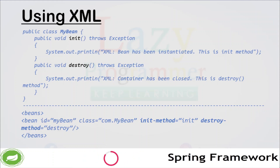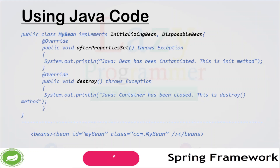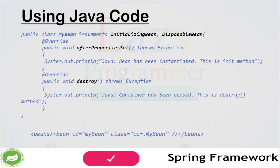The second way is using Java code. For the beans to call custom init and destroy methods on the startup of the Spring container, we need to implement two interfaces: InitializingBean and DisposableBean. After implementing these two interfaces, we need to override their methods — first one is afterPropertiesSet, which acts as the custom init method, and second one is destroy, which acts as the custom destroy method. Whatever logic we write in these two methods will be invoked when the container is starting or closing. In the XML we don't need to define what init or destroy method to call, because those are already handled by implementing the interfaces.